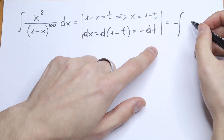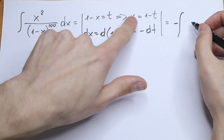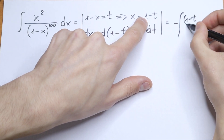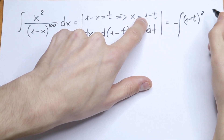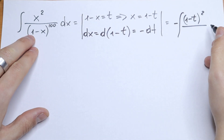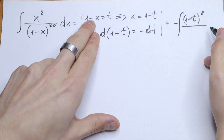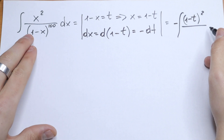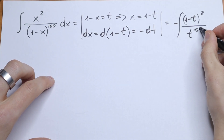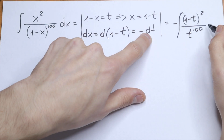Inside the integral we will have x squared, but x equals 1 minus t, so we will have 1 minus t squared in our numerator. And in our denominator we will have 1 minus x, which equals t, so we will have t to the power 100. And dx equals dt.